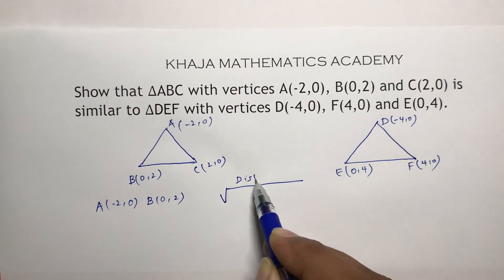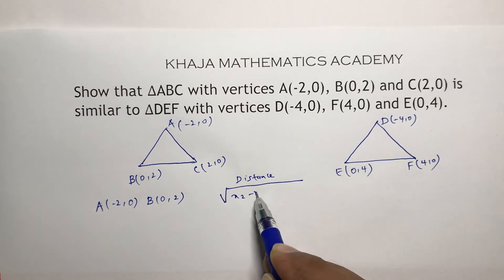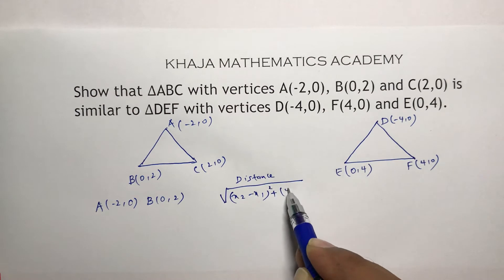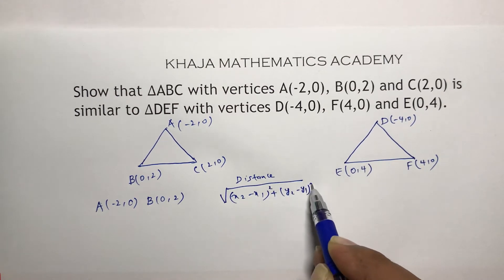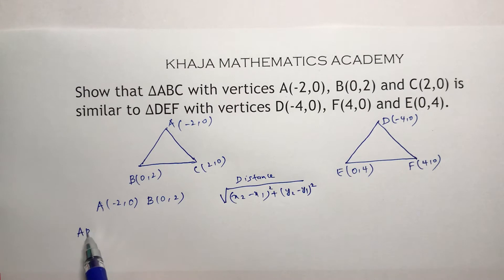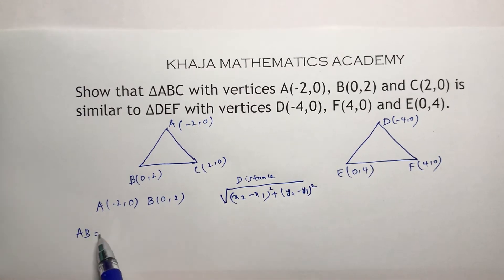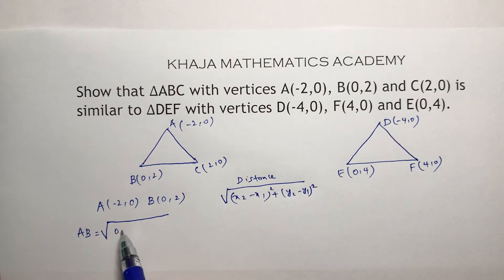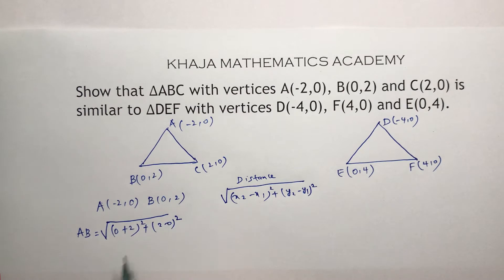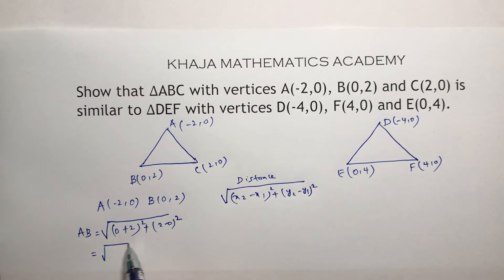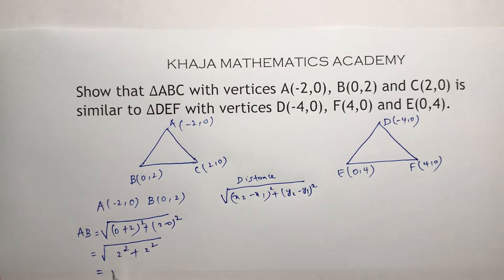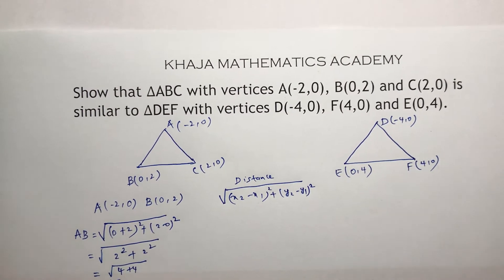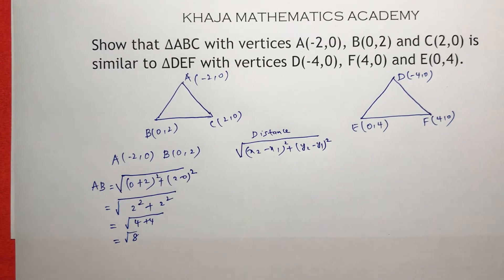The distance formula is: under root of (x2 minus x1) whole square plus (y2 minus y1) whole square. So AB distance will be under root of (0 plus 2) whole square plus (2 minus 0) whole square, which is 2 squared plus 2 squared, that is 4 plus 4, which is root 8.